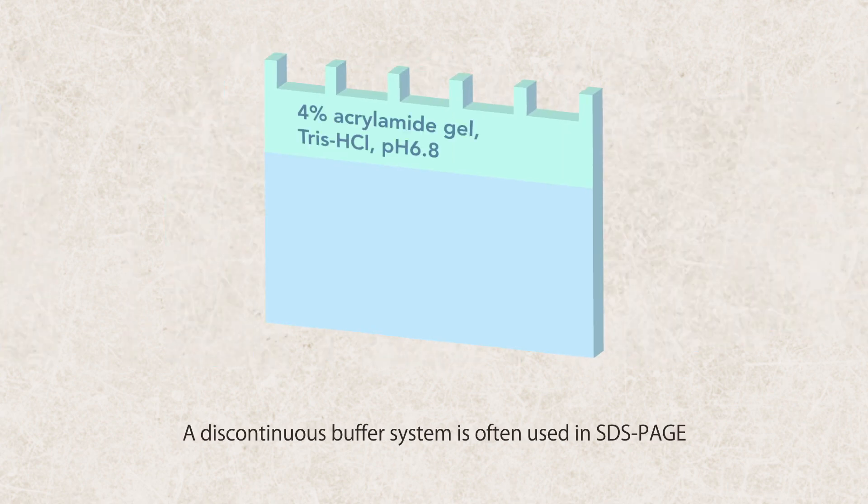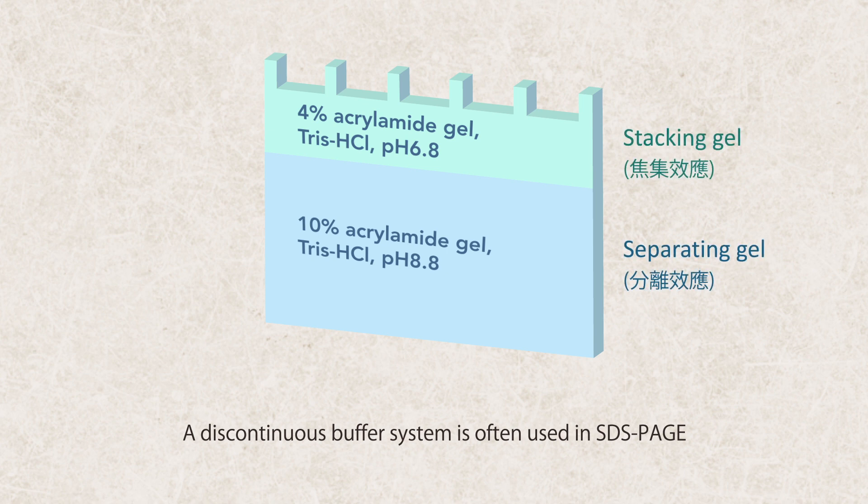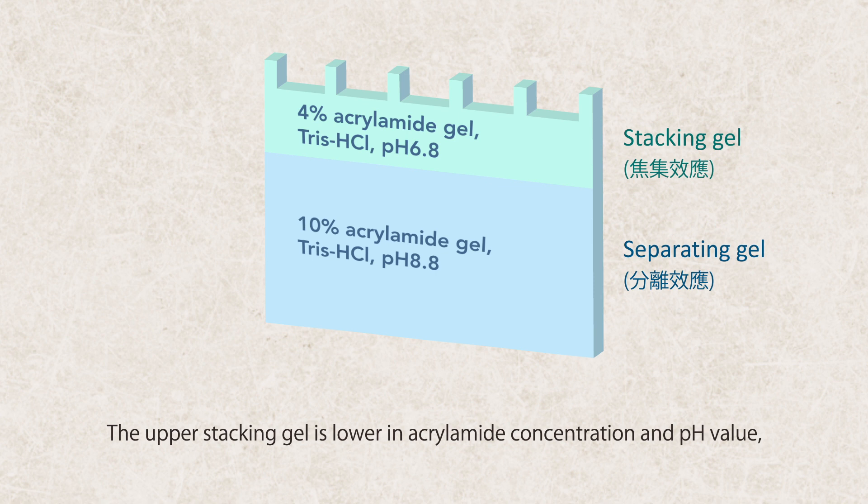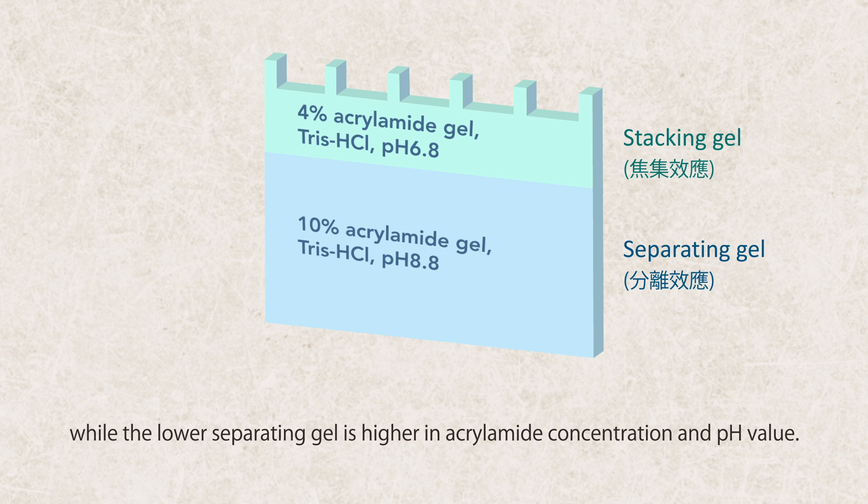A discontinuous buffer system is often used in SDS-PAGE to create a stacking effect on the upper gel before proteins enter the lower separation. The upper gel is lower in acrylamide concentration and pH value while the lower separating gel is higher in acrylamide concentration and pH value.